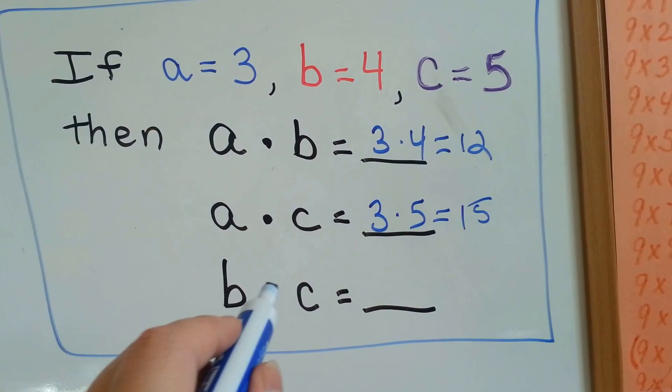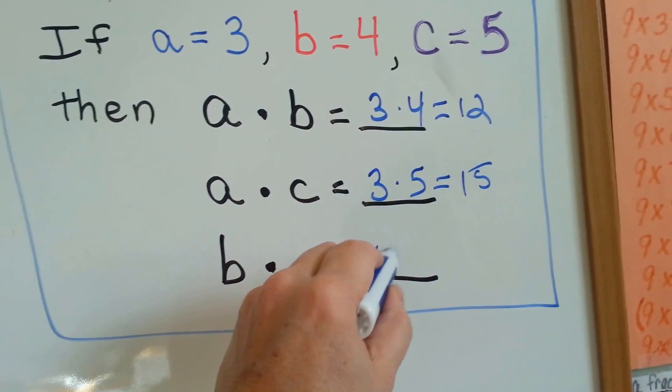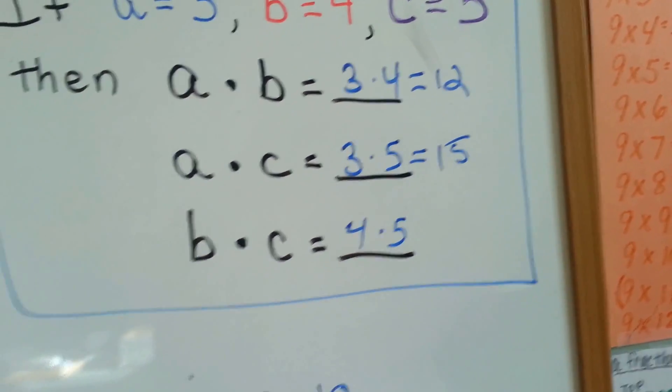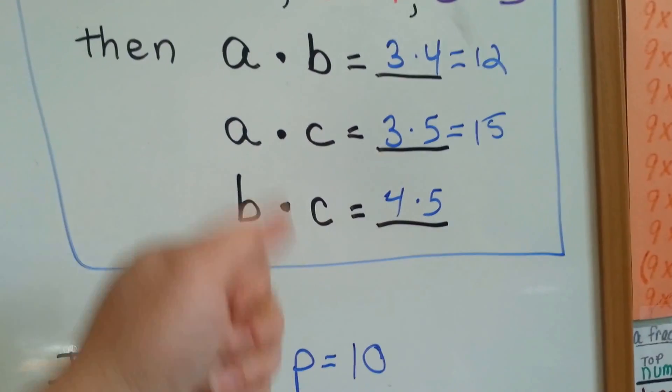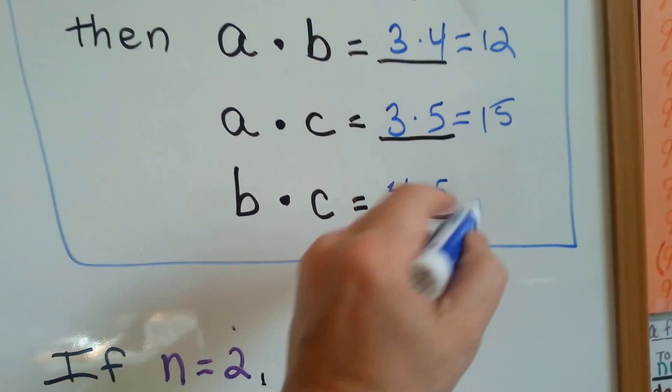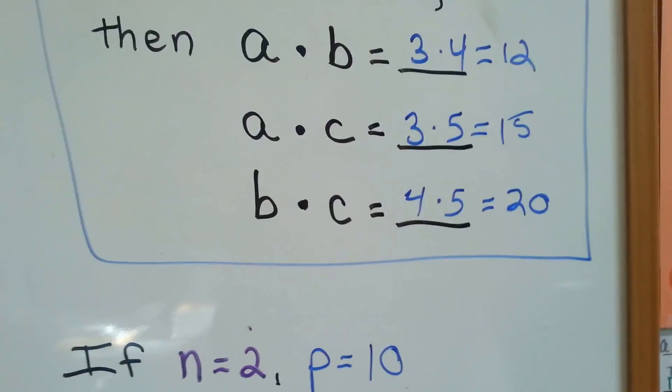What about b times c? b is 4 times c is 5. 4 times 5 is... How much is 4 5's? Let's count by 5's. 5, 10, 15, 20. So, 4 times 5 equals 20.